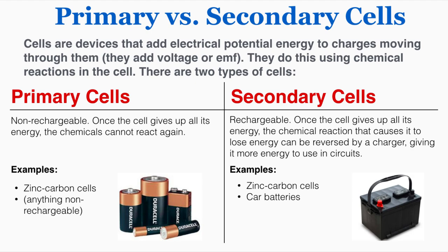There are two types of cells: primary cells and secondary cells. Primary cells are non-rechargeable. Once the cell gives up all its energy, the chemicals cannot react again. Some examples of that are everyday batteries, specifically zinc carbon cells — basically any battery that is non-rechargeable is a primary cell.